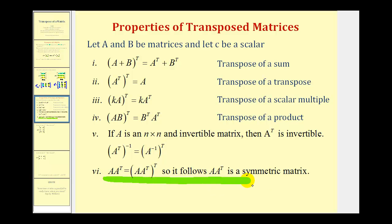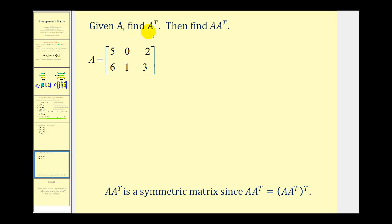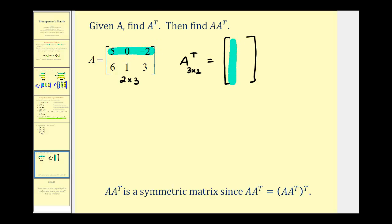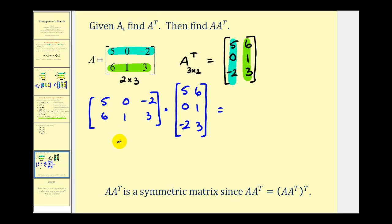Let's look at an illustration of this last property. We are given matrix A — a two by three matrix — and asked to find the transpose of matrix A and then the product of matrix A and its transpose. The transpose will be a three by two matrix with three rows and two columns. The first row of matrix A forms the first column of the transposed matrix, and the second row forms the second column, giving us five, zero, negative two and six, one, three. To find the product, we have a two by three times a three by two; since the inner dimensions match, the product is a two by two matrix.